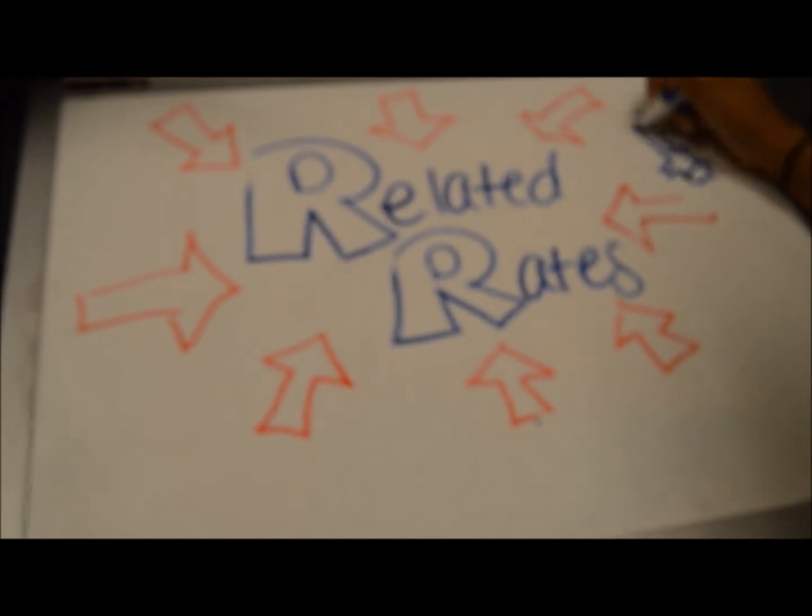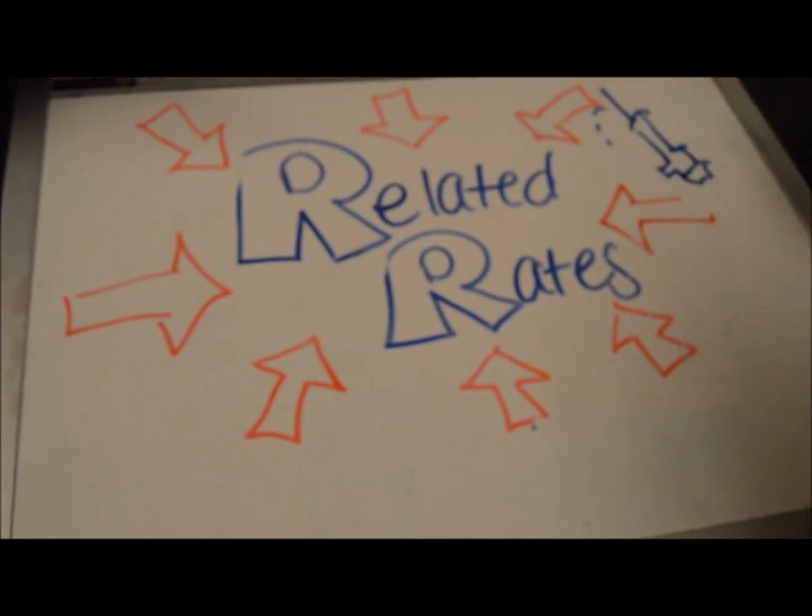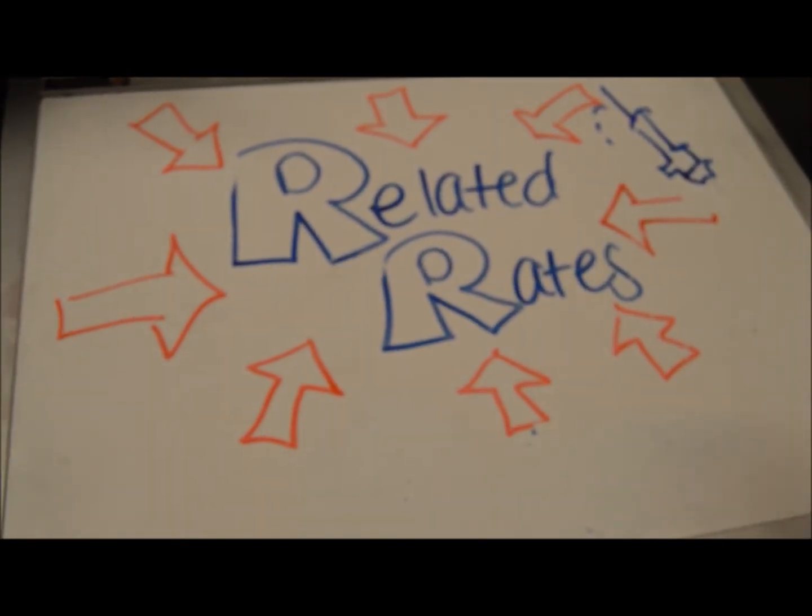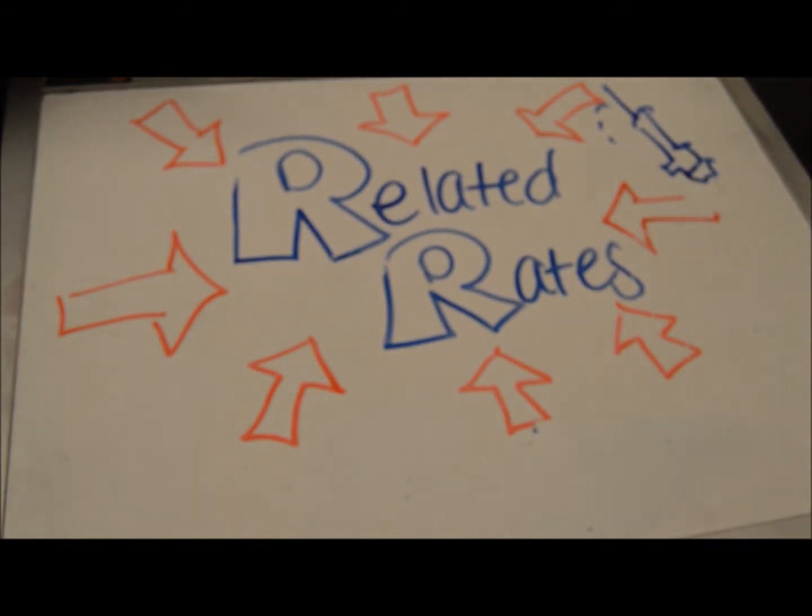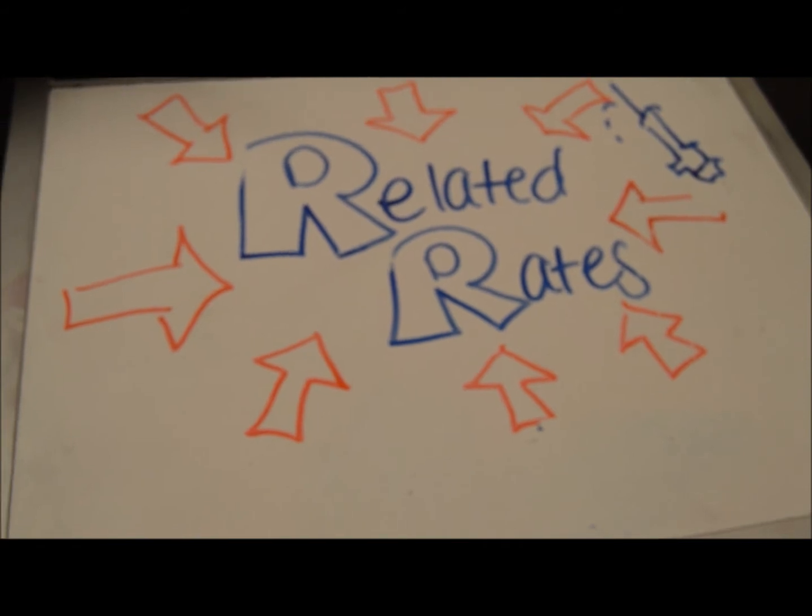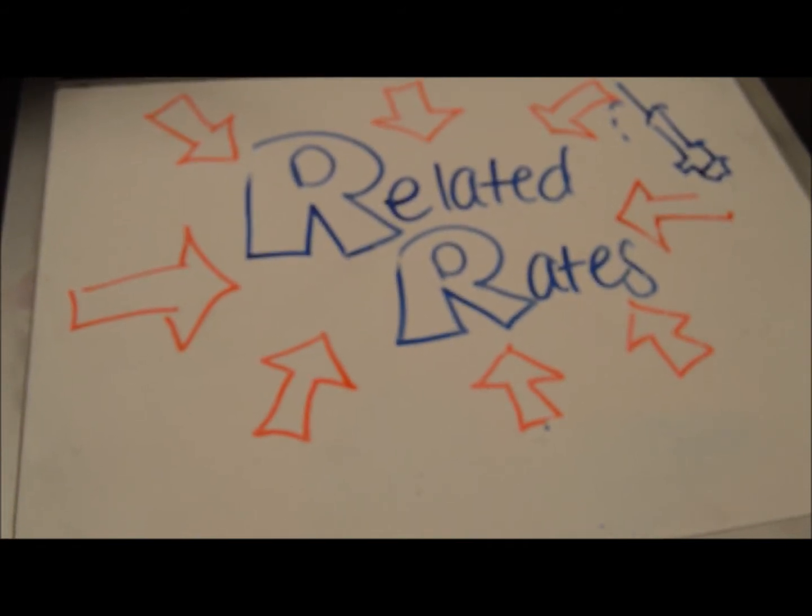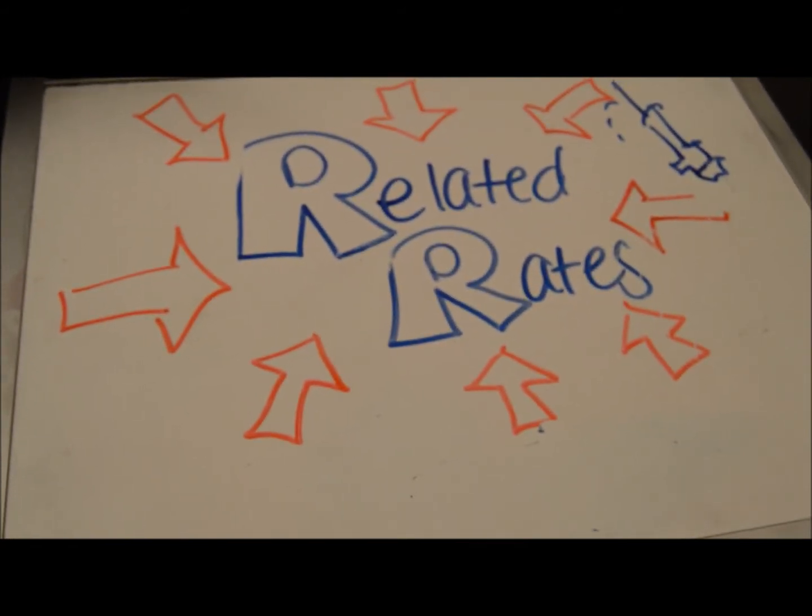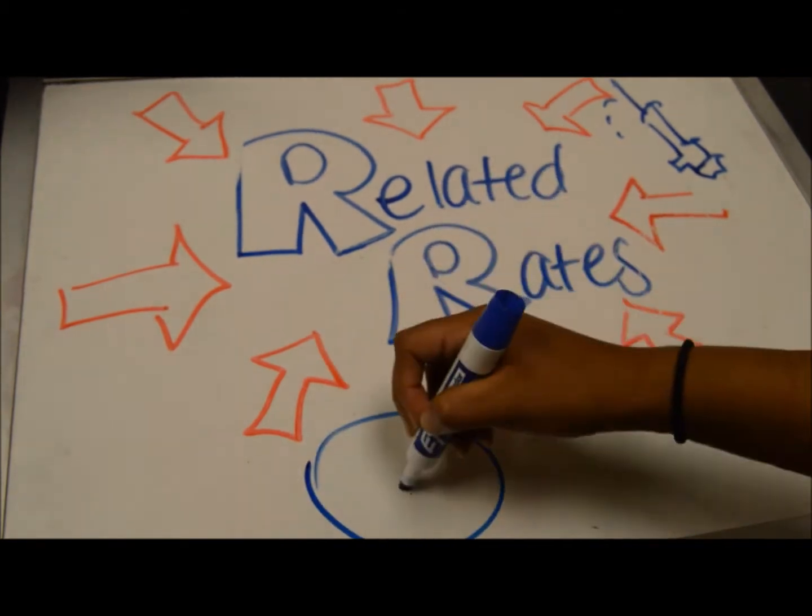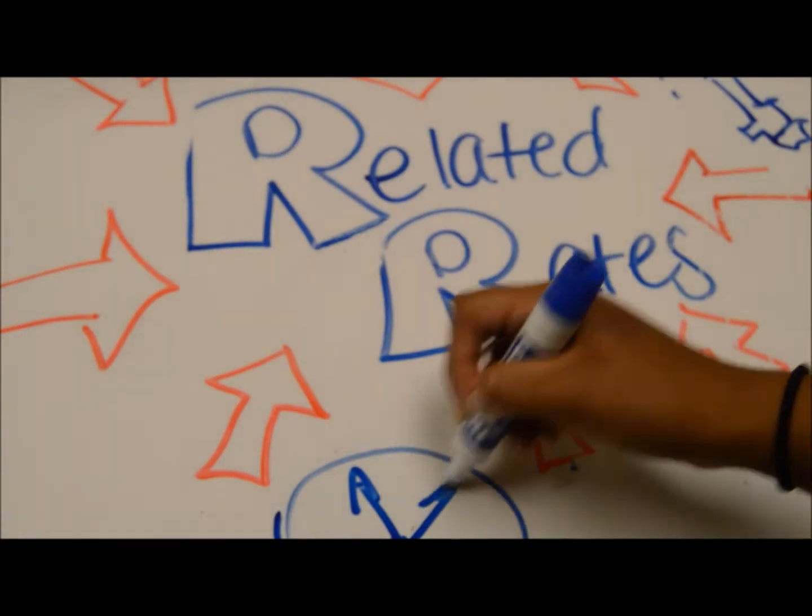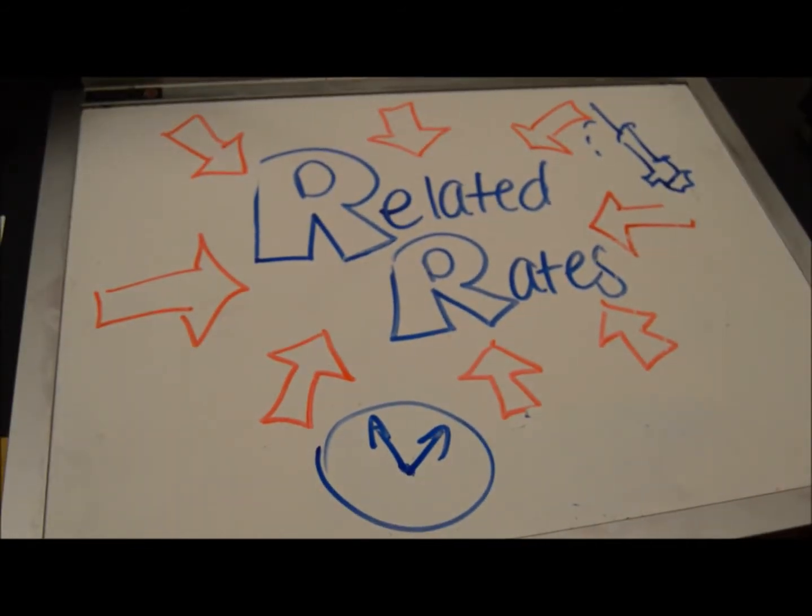In order to properly correlate calculus to the field of medicine, we are going to use related rates. Related rates consist of problems that involve finding a rate at which a quantity changes by relating that quantity to other quantities whose rate change are known. The rate of change is usually with respect to time and written dr over dt.